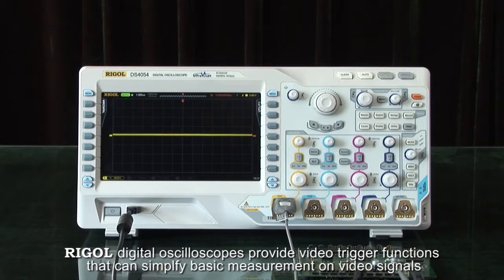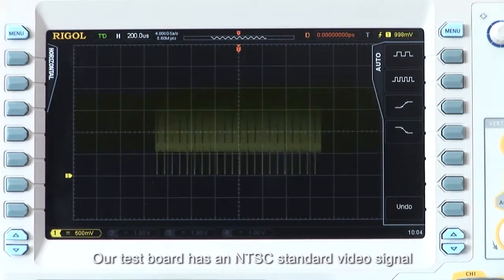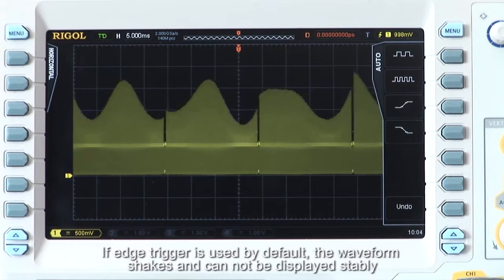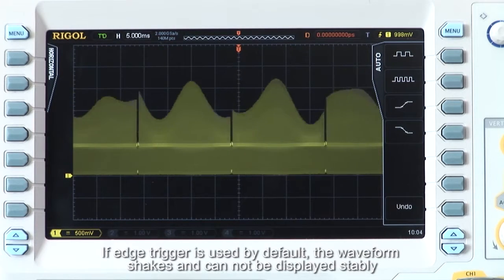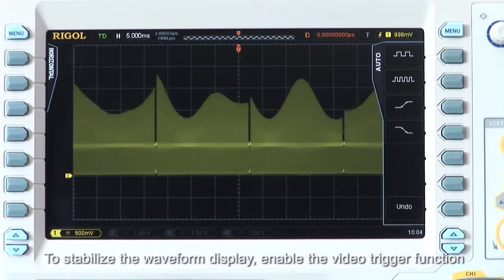Rigol digital oscilloscopes provide trigger functions that can simplify basic measurements on video signals. Our test board has an NTSC standard video signal. If edge trigger is used by default, the waveform shakes and cannot be displayed stably. To stabilize the waveform display, enable the video trigger function.